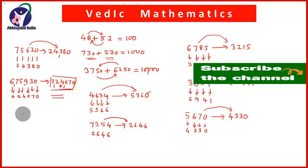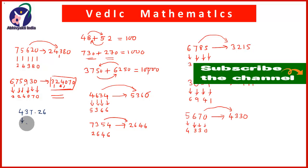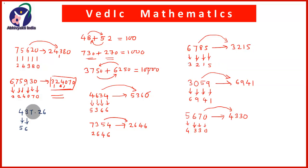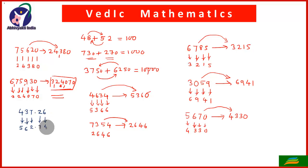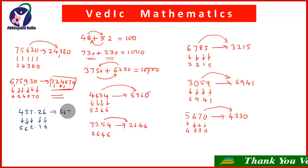Now let us see how to find the complement of decimal numbers. Take 437.26. Simply do as before: 4 and 5 give 9; 3 and 6 give 9; 7 and 2 give 9; then decimal point; 2 and 7 give 9; 6 and 4 give 10. So the complement of 437.26 is 562.74.